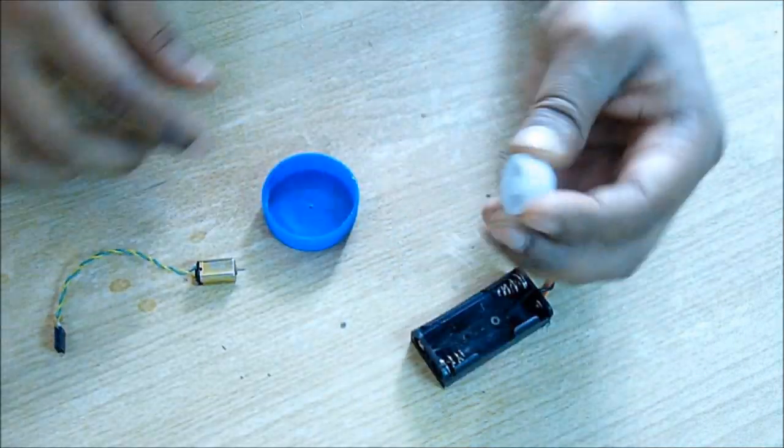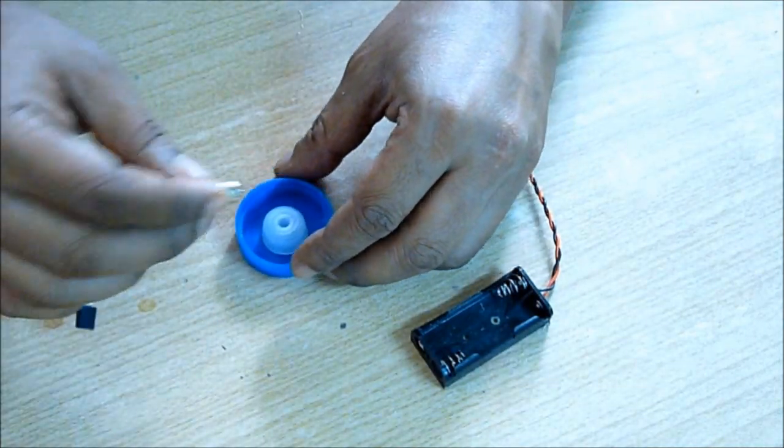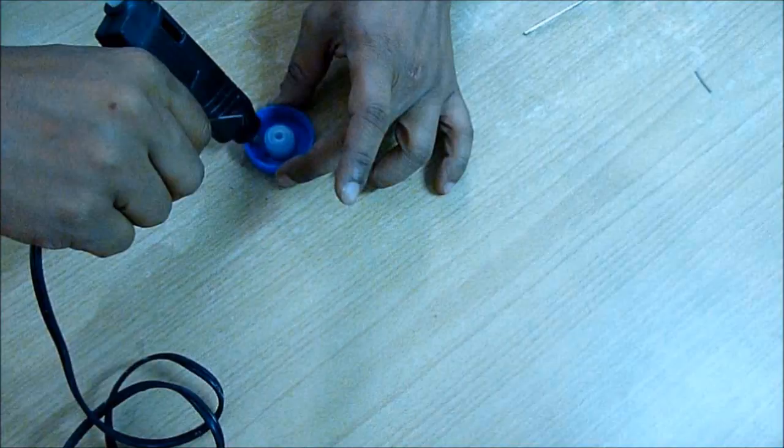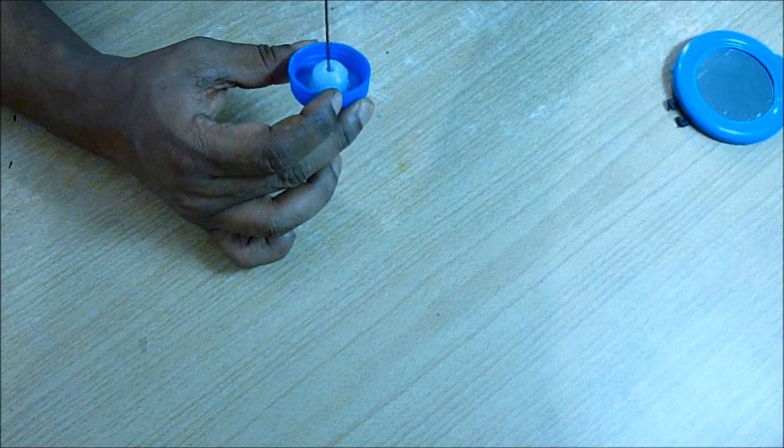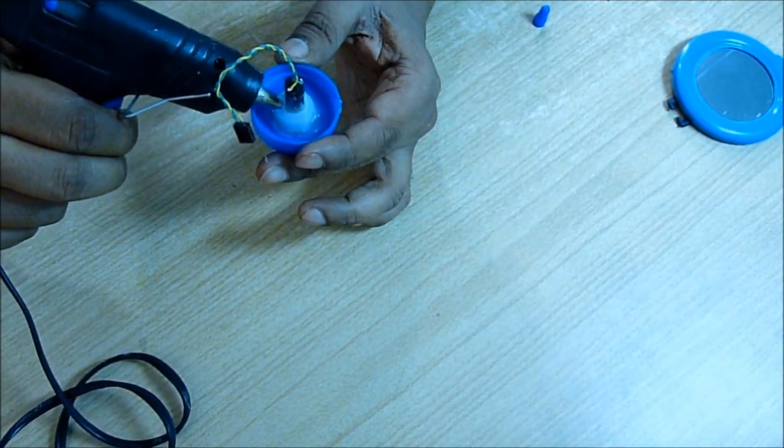Now to fit the motor on the blue cap you need another small cap. Glue the small cap first and fit the DC motor on top of it with the shaft and glue it.